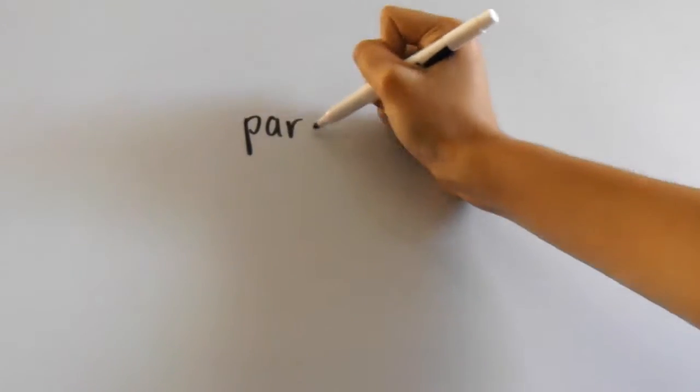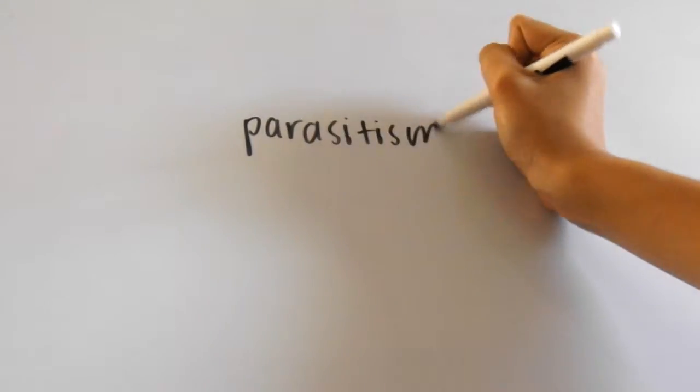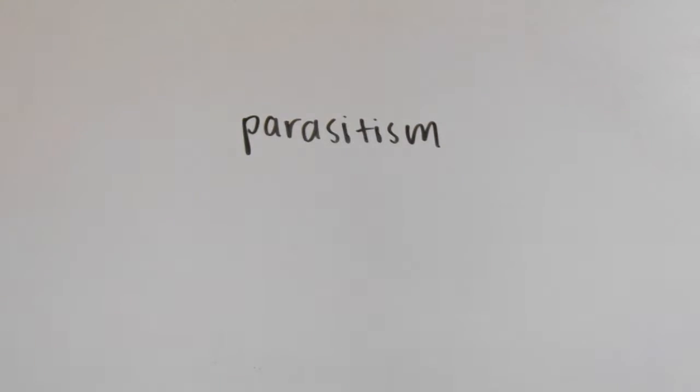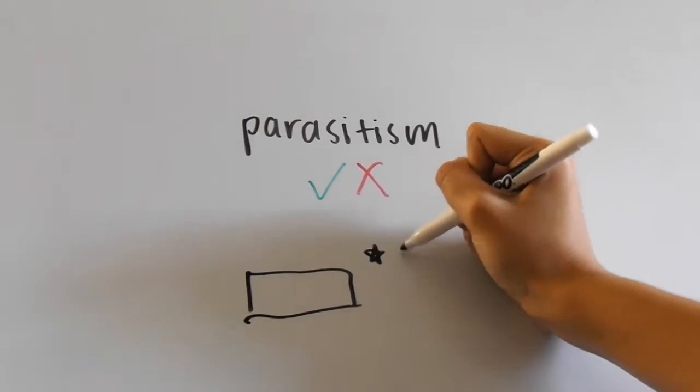The last type of symbiosis is parasitism, the most annoying kind. The one thing that really comes to mind when I hear parasitism is a tapeworm, since it just attaches itself right in your intestine and eats up your food, gaining your nutrients. So rude.